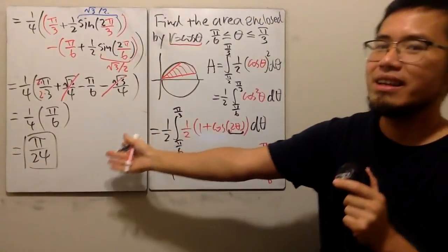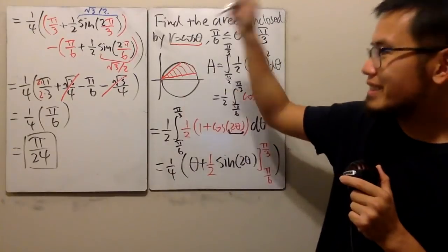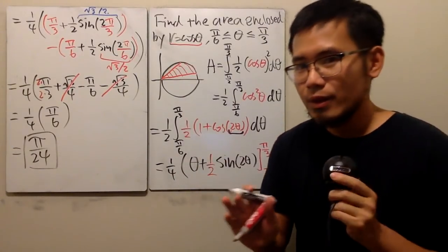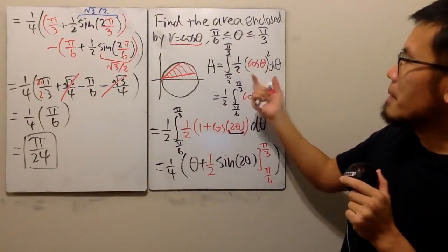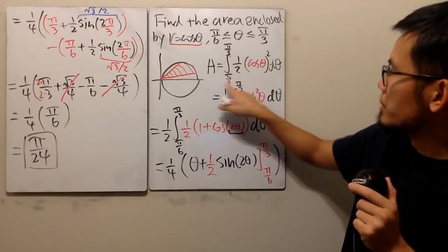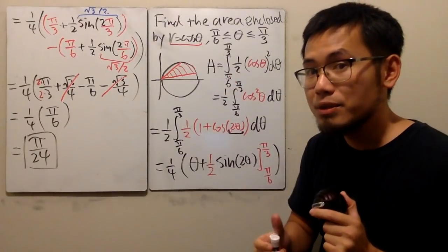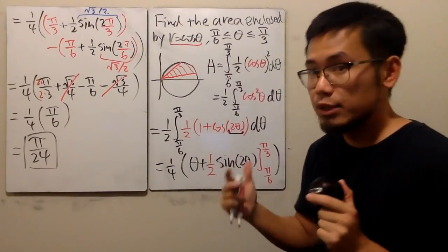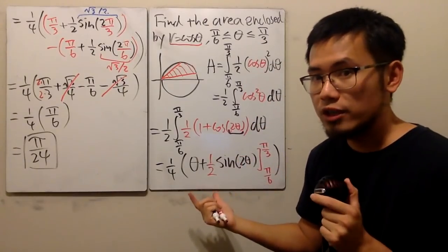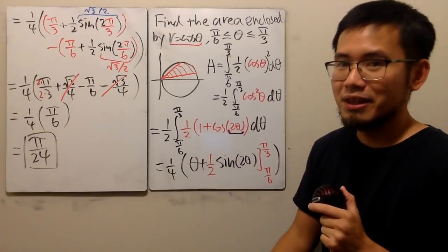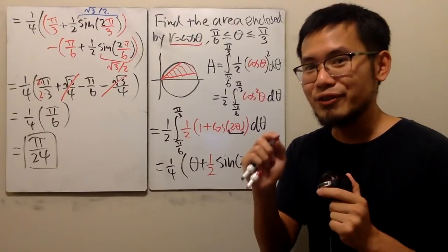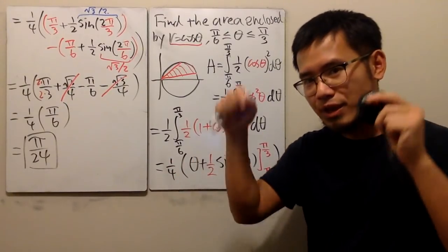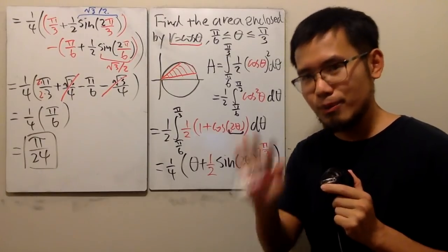Pi over 24 is the answer for this area. Recap: know the formula and pay close attention to how to find the angles. If the angles are given, this is seriously not so bad — you still have to remember your integrations. If the angles are not given, watch my other videos to see how to find the angles. Anyway, that's it for this. If you have any questions, leave them down below in the comment section, and I'll see you guys in the next video. Bye.